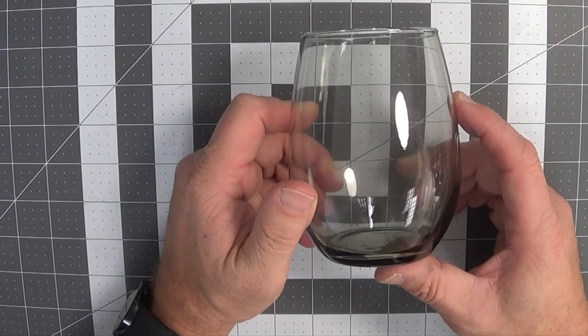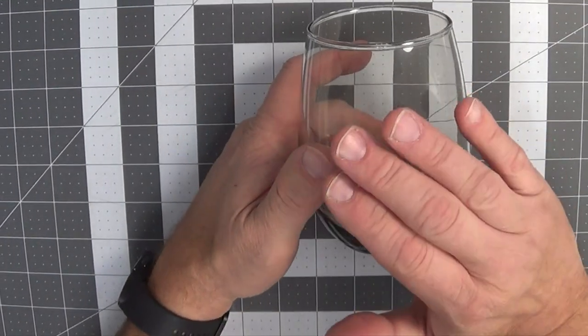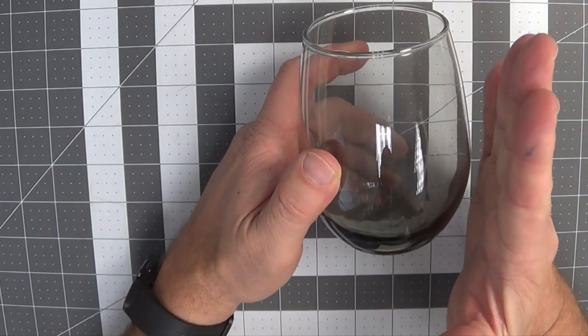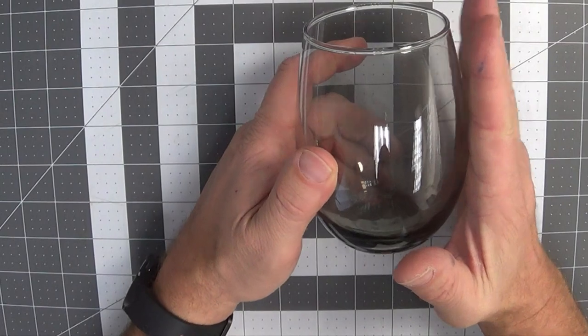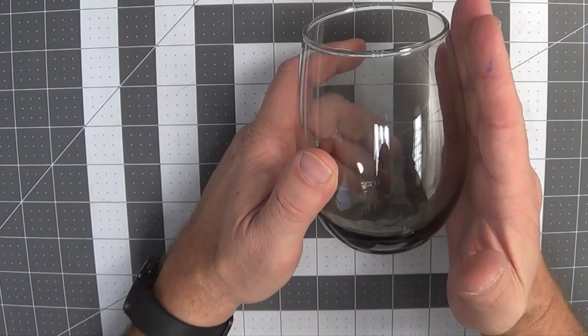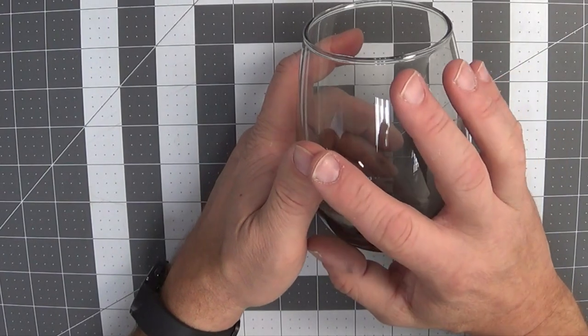And next we're going to do the same thing or nearly the same thing with this wine glass. And one of the things I want to point out is this is a spherical shape. It's not just a tapered tumbler or a straight tumbler where it's just a straight cylinder which is much easier to apply to, but it is a spherical shape. So you have some multiple challenges here.